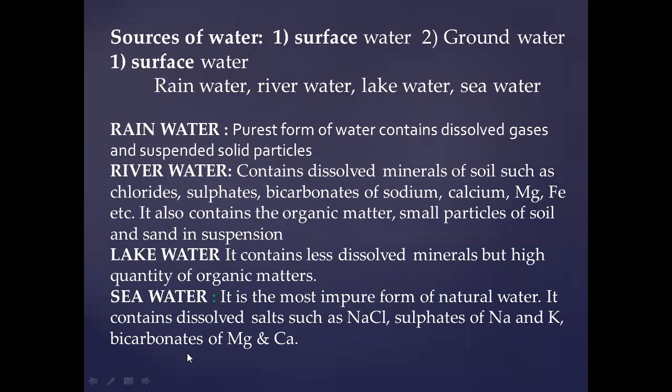There are two main sources of water: one is surface water and the other is groundwater. Surface water is available in the form of rain water, river water, lake water, and sea water. Rain water is the purest form of water at the point where it originated, but as it reaches the ground it becomes contaminated — it dissolves gases and suspended impurities also become present.